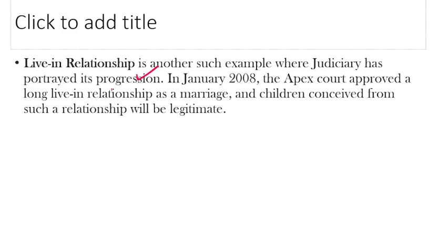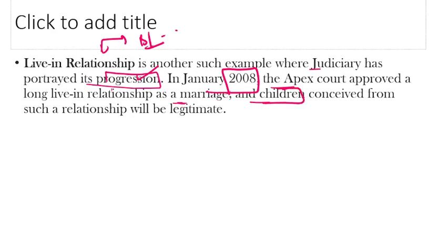Live-in relationship — यह एक example है जहाँ judiciary ने अपना progressive mindset दिखाया है। Live-in relationship means लड़का-लड़की साथ में रहते हैं without marriage। January 2008 में Supreme Court ने approve किया कि a long live-in relationship is treated as a marriage, and children born from it are legitimate — illegitimate नहीं बोला जाएगा।